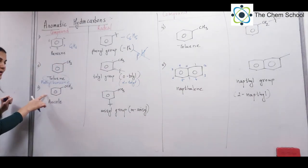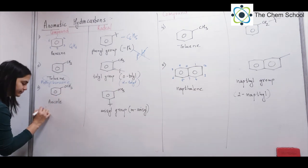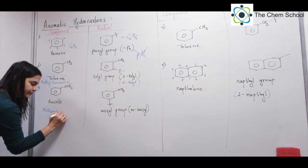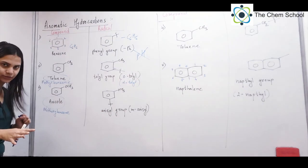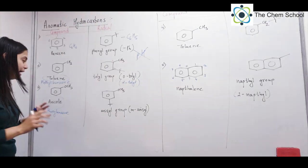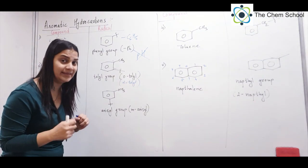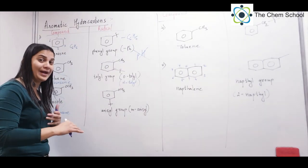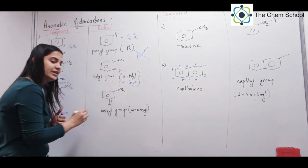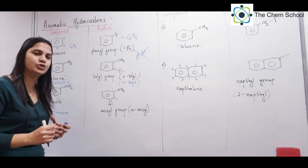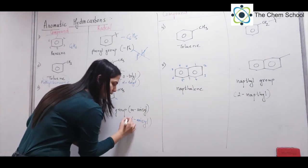If OCH3 (methoxy) is attached to benzene, it is methoxy benzene, which has a special name: anisole. So you can write either methoxy benzene or anisole. Now if one hydrogen is removed from the aromatic ring of anisole, the remaining group is called anisyl. By default, OCH3 is at position 1. If the free valency is at position 3, then with respect to 1, that is meta. So this is meta-anisyl, or 3-anisyl.